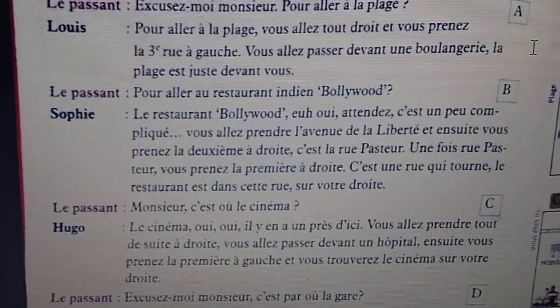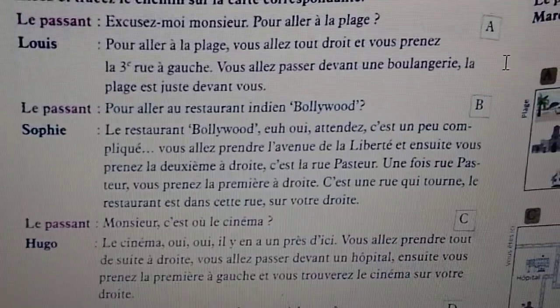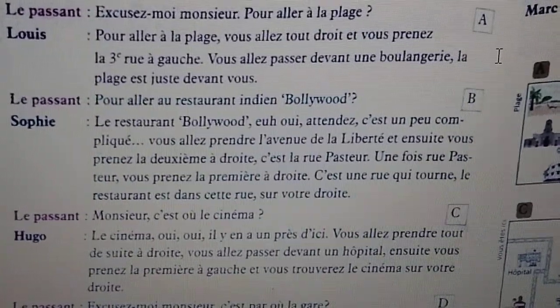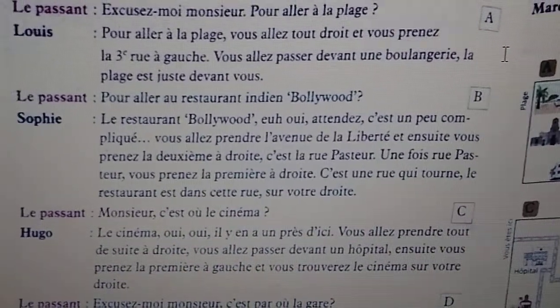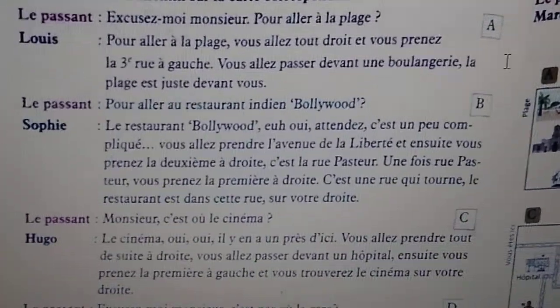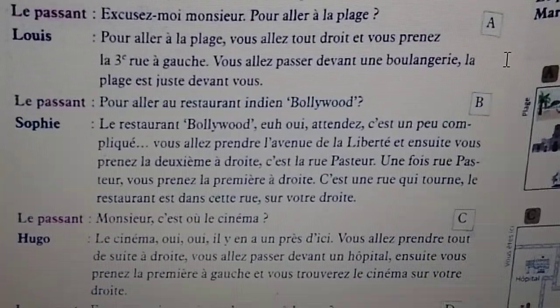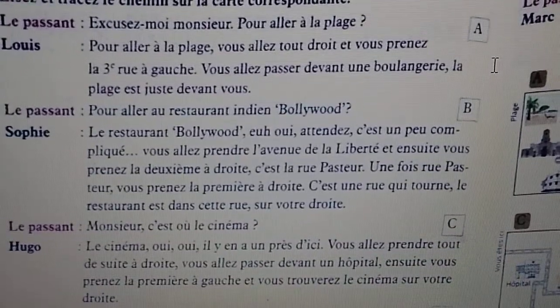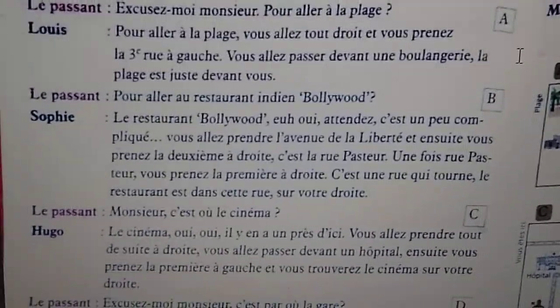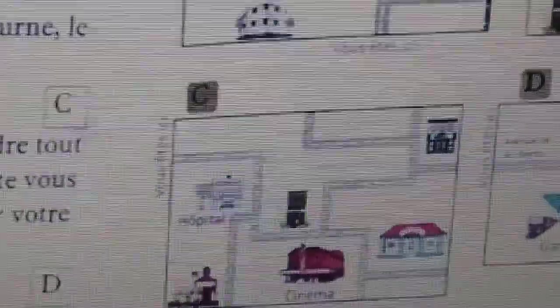This time the passer-by is looking for a cinema hall. Hugo is helping: cinema, yes yes, there is one nearby. You are going to take a right, and you will be passing in front of the hospital. Then you take the first left and the cinema is on your right side. This is the third dialogue — I can show you the image.